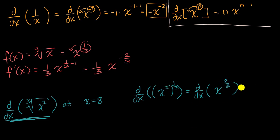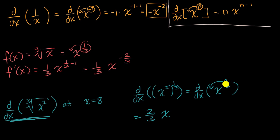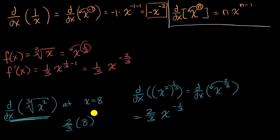Now applying the power rule: bring the 2/3 out front — 2/3 times x to the 2/3 minus one. What's 2/3 minus one? That's 2/3 minus 3/3, which is negative 1/3. So the derivative is 2/3 times x to the negative 1/3. We want to evaluate at x equals eight, so that's 2/3 times eight to the negative 1/3.